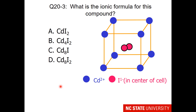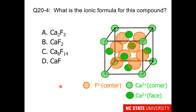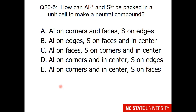Here is your student question. Given the picture with cadmium on the corner and two iodide ions in the center, what is the ionic formula for this compound? After you've done this for the unit cell, think about whether or not it makes sense given the charges on the ions. Here is another unit cell to analyze: there are 8 fluorides in the center, calcium ions on the corners and the faces — again, think about what makes sense ionically. Finally, please build your own unit cell to make a neutral compound between aluminum 3+ and sulfide ion with a 2− charge.